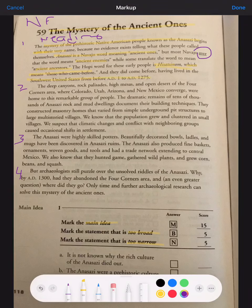The deep canyons, rock palisades, high mesas, and open desert of the Four Corners area, where Colorado, Utah, Arizona, and New Mexico converge, were home to this remarkable group of people. Right?